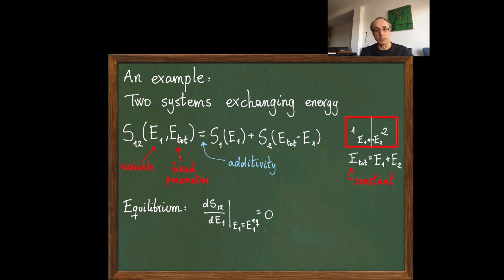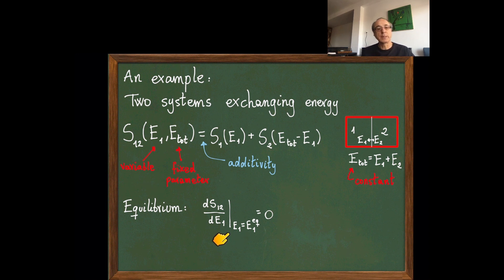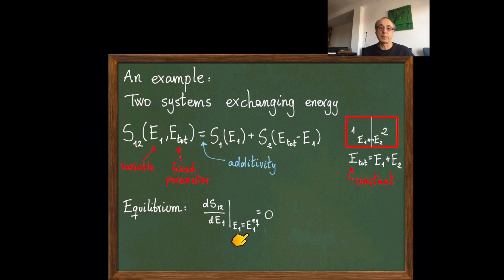One way to maximize: we have to maximize this function, and the value of E1 that maximizes the function is the equilibrium value. If the function is regular, the derivative will vanish at the maximum. We have to also check if it is a maximum or minimum, but the equilibrium value of E1 will obey this equation. This is a mathematical equation that, if we know everything, we can solve to find the equilibrium state—that is, what is the value of E1.